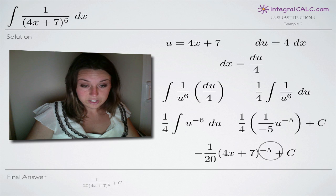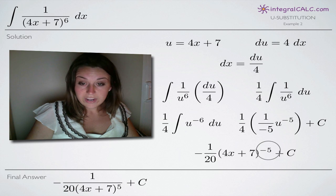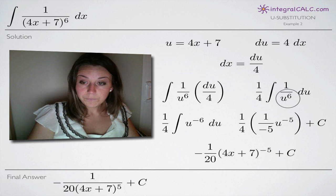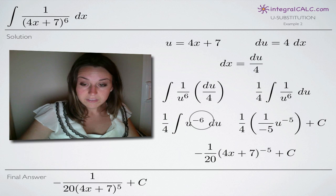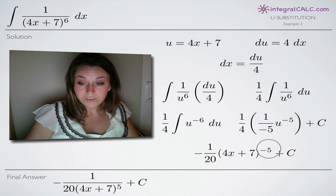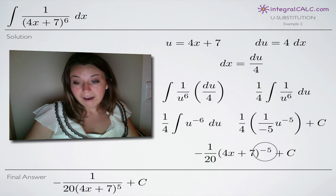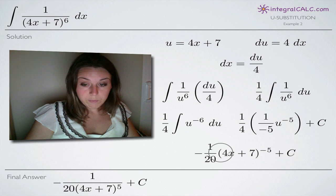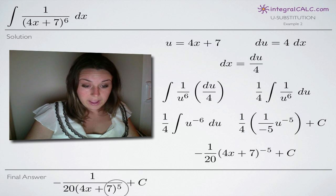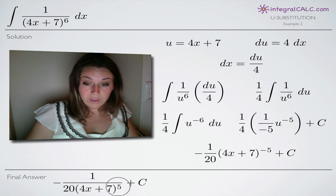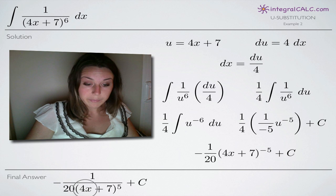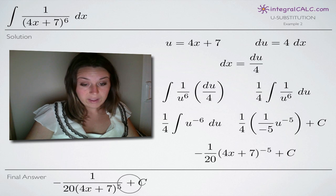Our final step of simplification which gives us our final answer is to apply that rule that allowed us to bring u to the 6th into the numerator as a negative 6. Now we have something as a negative exponent in the numerator so we're going to move it to the denominator and make this exponent positive instead. So our final answer for this problem is negative 1 over 20 times 4x plus 7 to the 5 plus c.